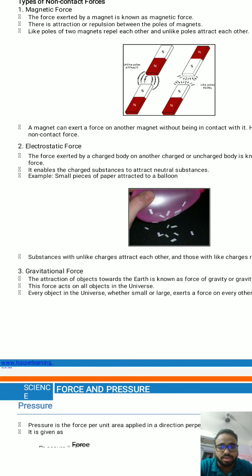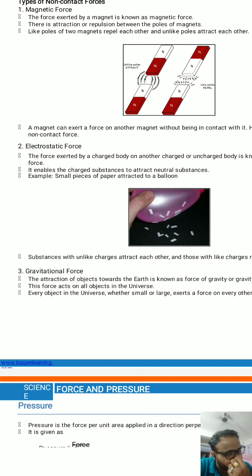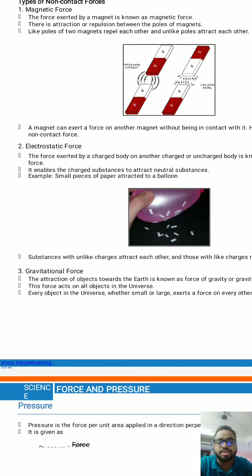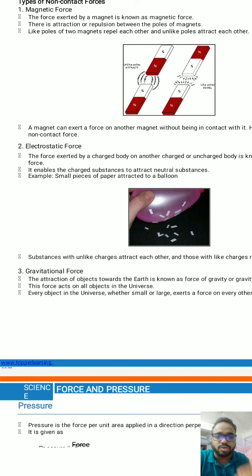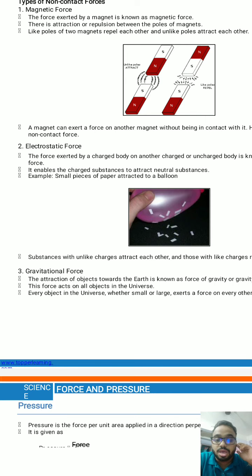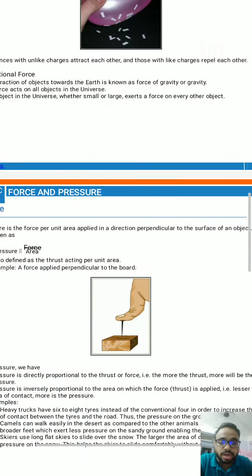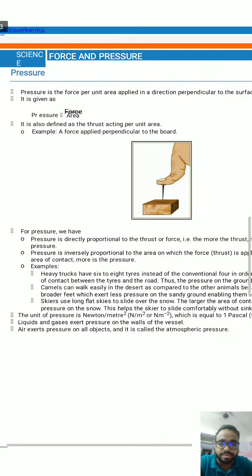Gravitational force is the attraction of objects towards the Earth — that is gravity. Every object in the universe has an attractive force. These are the different types of contact and non-contact forces we discussed in the last class. Now we will move on to pressure.